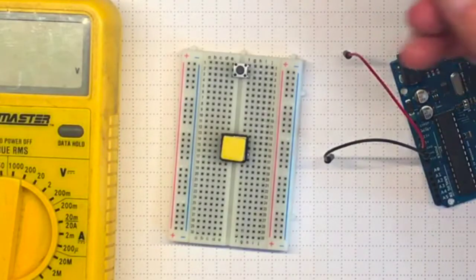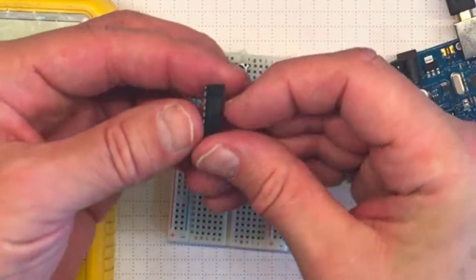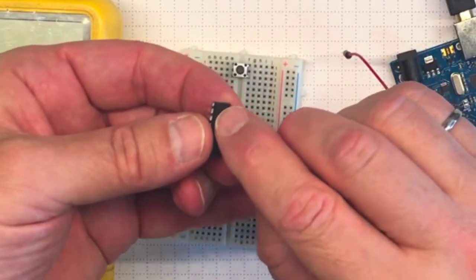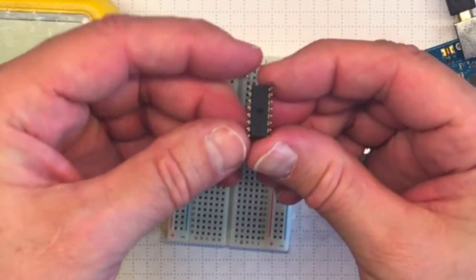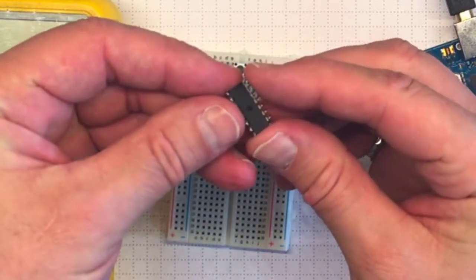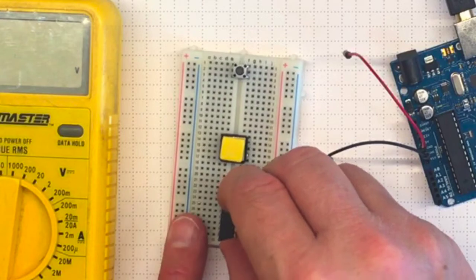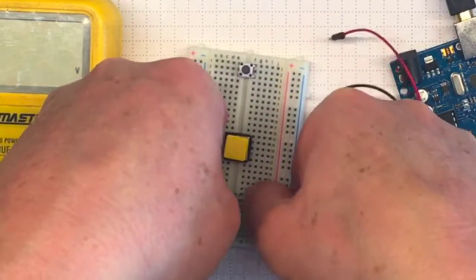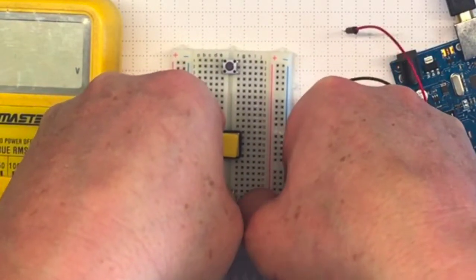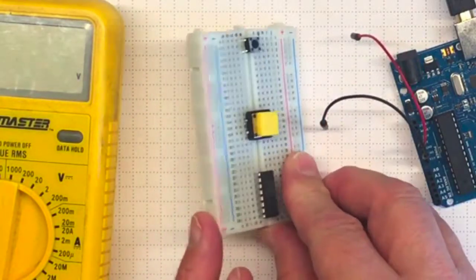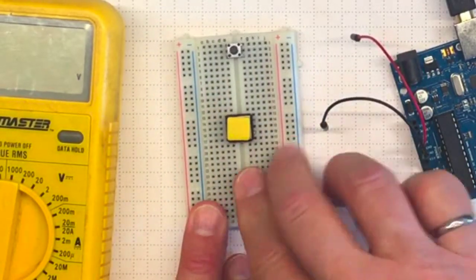This amplifier chip has a marking for pin 1 up at the top here where this little divot is. It also has these fairly fragile pins, so let's make sure that we get it into the breadboard right away so that they don't get bent. Line the pins up carefully and then press the chip gently into the sockets on the breadboard.